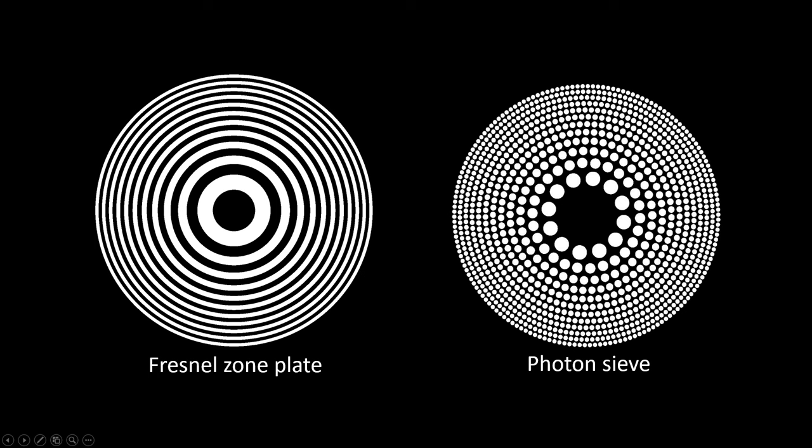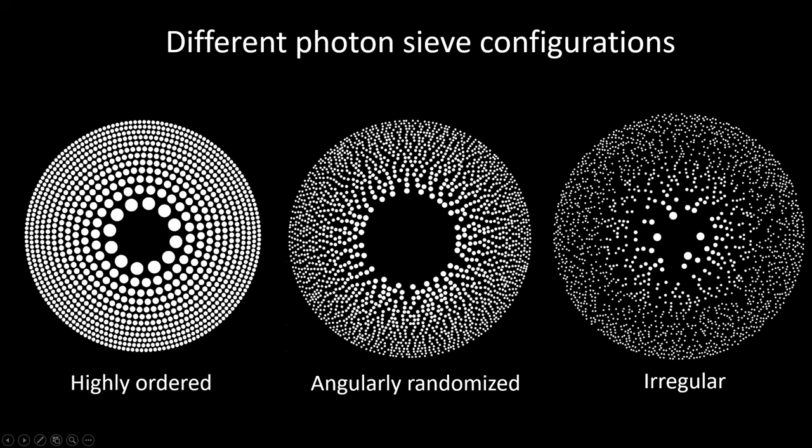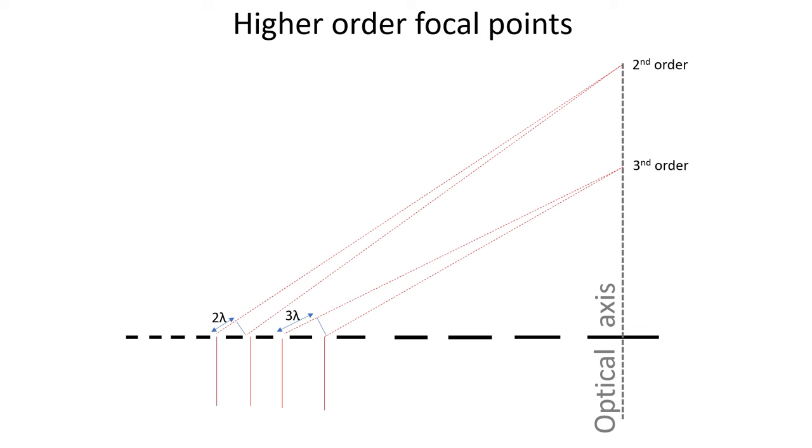At first glance I was not particularly impressed, since many of the sieves looked a lot like the Fresnel zone plates that I had made previously. But as it turns out, photon sieves have a few advantages over zone plates. Due to their irregular patterns, they can largely suppress the higher order focal points, which are quite strong in Fresnel zone plates. At the same time they can also create a sharper image by tweaking the exact positions of the apertures — though for this to work well, you need quite a lot of them.